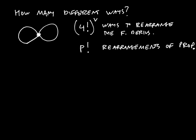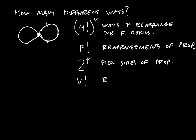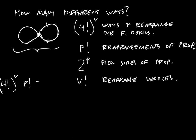Each propagator has two sides, so there are 2^P ways to rearrange the two sides of each propagator — for example, it could be done this way, or you could flip it around. And finally, there are V factorial ways to rearrange the vertices amongst themselves. Therefore, any picture represents a total of four factorial to the V, times P factorial, times 2^P, times V factorial different patterns of contractions.